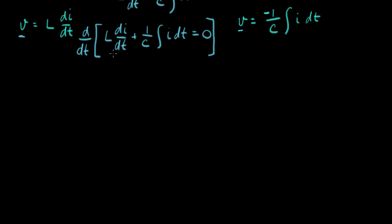And that gives us, we get the second derivative of the first term. So we get L, second derivative of I with respect to time, plus one over C. And then the derivative of the integral of I dt turns into just I. And the derivative of zero on this side is zero.